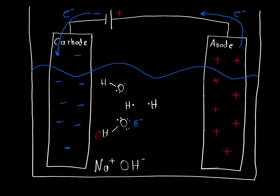Now what you can see is that we have two hydrogen atoms next to one another. Hydrogen is a diatomic atom — it doesn't like to exist as just H; it likes to exist as H₂. So these two hydrogen atoms are going to bond. They each have one electron, they're going to share those electrons, and those electrons are going to form the bond between them.